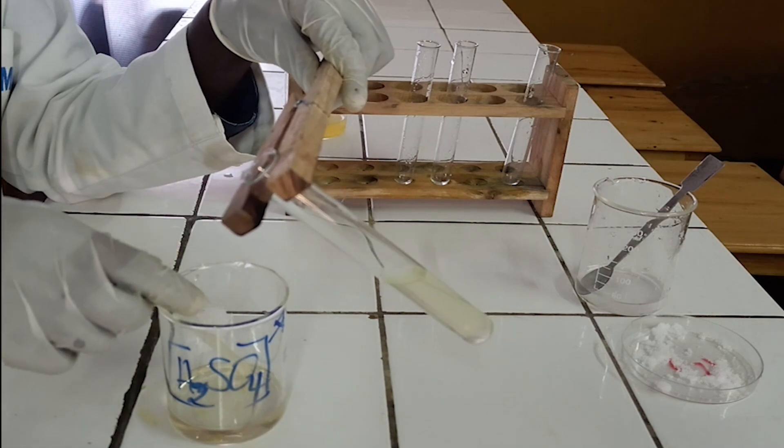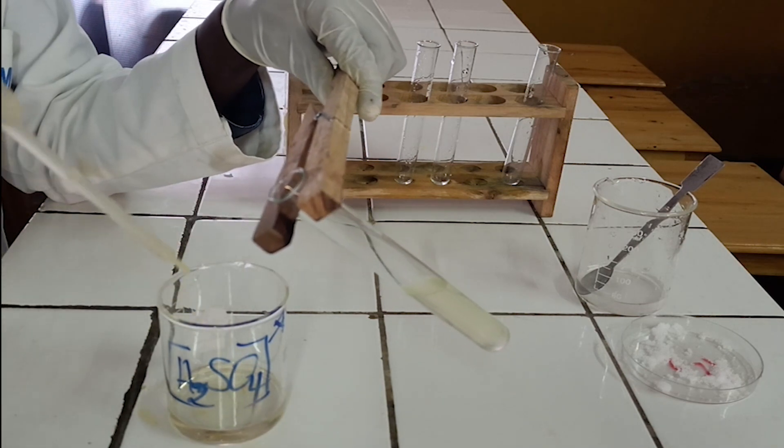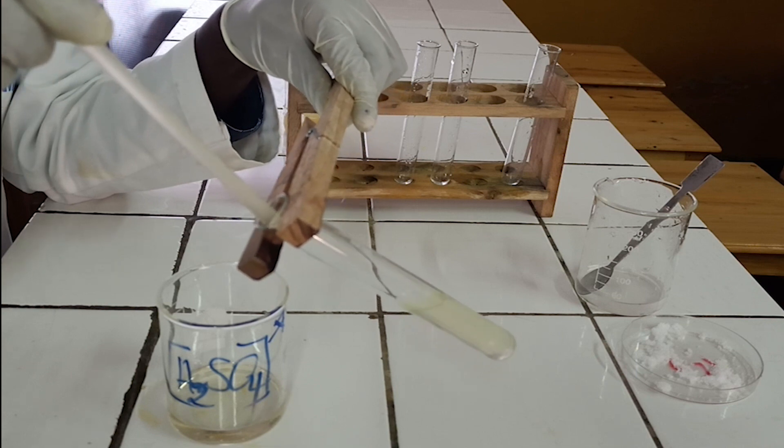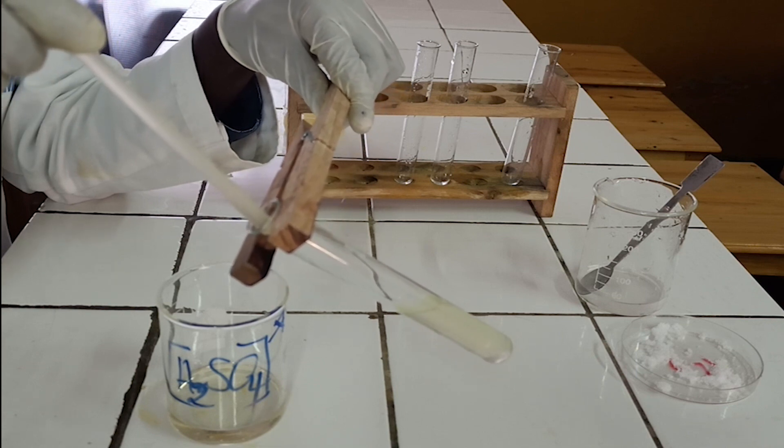Hold the test tube in an oblique position, then add concentrated sulfuric acid drop by drop down the wall of the test tube.